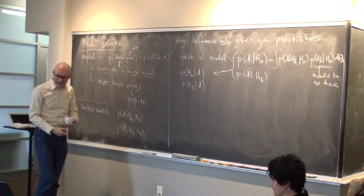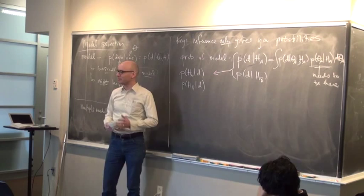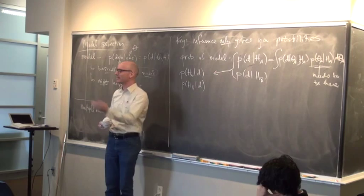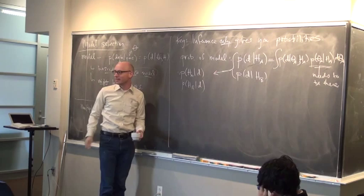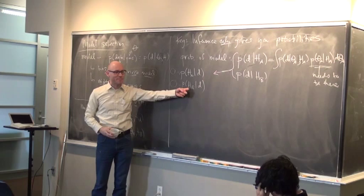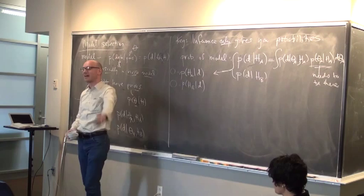For a Bayesian or a Frequentist — for anybody — the models are descriptions of the data. A lot of people think about which model is right. But actually, neither model is right. If you actually wanted to write down the probability that a model is the correct description of reality, you'd get zero. These are extremely approximate descriptions of reality. The correct description of reality involves the position and velocity of every molecule in this room. Your model doesn't have all those parameters. Therefore, your model is wrong.